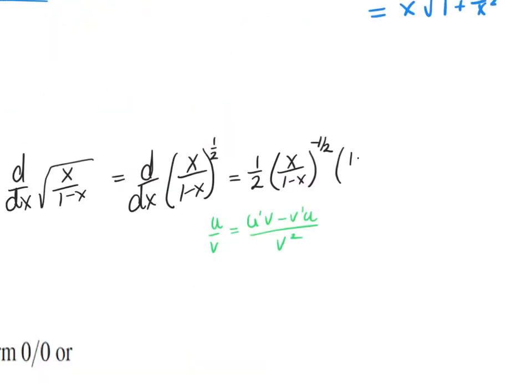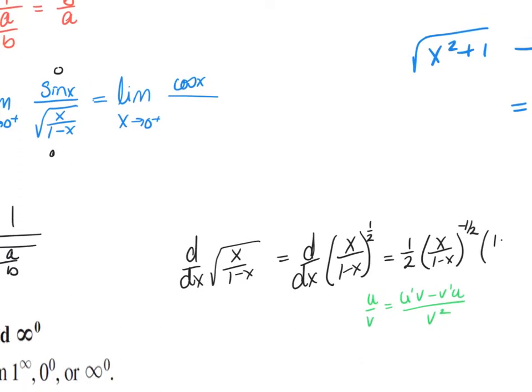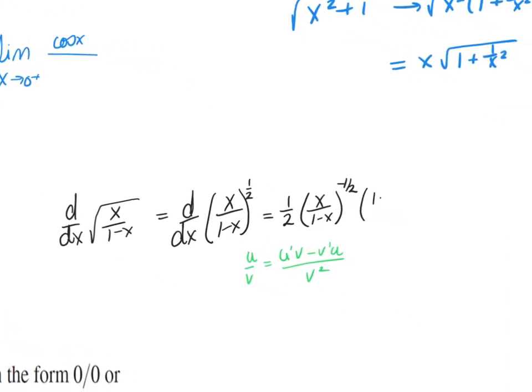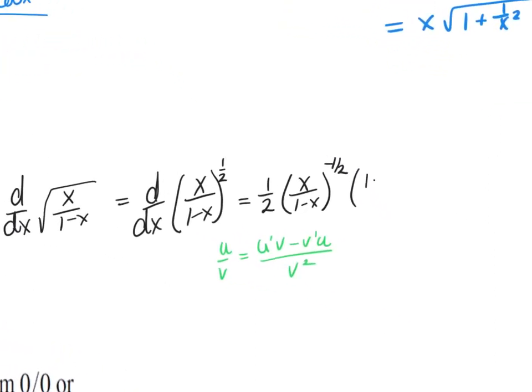I forgot to start the recording, so I'm going to start over — not going to erase, but start over. When I started back here, I did the derivative of sine, which is cosine, and now I'm working with the denominator. The denominator is the square root of x/(1−x), so I'm going to rewrite the square root as an exponent and use the chain rule and the quotient rule.